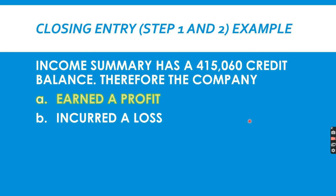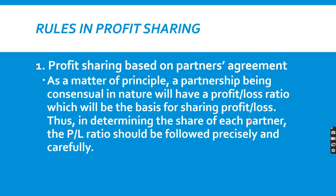Now that we know the partnership is profitable, how do we distribute that profit? The distribution is dependent on the agreement of the partners. The basic rule is: profit sharing is generally based on the partners' agreement. The partnership being consensual means everything can be agreed upon — equal sharing, capital-based, average capital, beginning capital, ending capital, original capital ratio, etc.